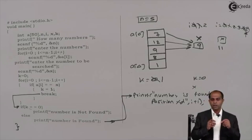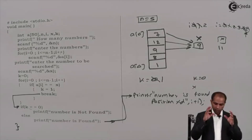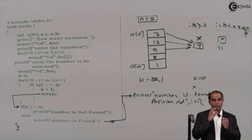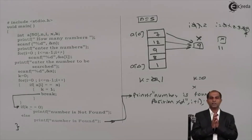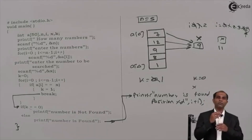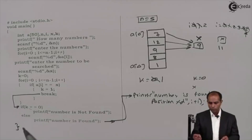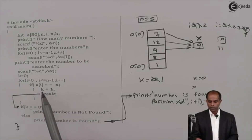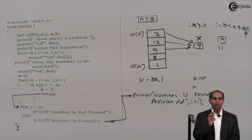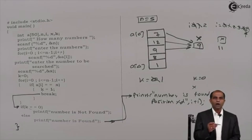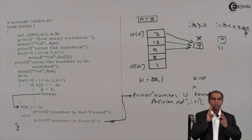To display the position, just change the last printf to: `printf("Number found at position %d", i+1)`. Now the program searches and displays the position. You can also modify the program to find the total occurrences of the number: use k as a counter instead of a flag. Replace `k = 1` with `k++`, and remove the `break`. The number of times k gets incremented tells you how many times the number occurs.